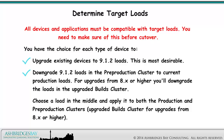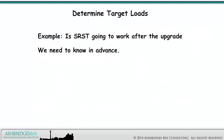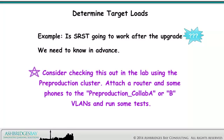You can also downgrade the 9.1.2 loads in the pre-production cluster to current production loads — for upgrades from 8.x or higher, you'll downgrade the loads in the Upgraded Builds cluster. Or choose a load in the middle and apply it to both the production and pre-production clusters. As an example: is SRST going to work after the upgrade? We need to know in advance. Consider checking this out in the lab using the pre-production cluster — attach a router and some phones to the pre-production Collab A or B VLANs and run some tests. The fewer times you have to say 'I didn't test that,' the better.